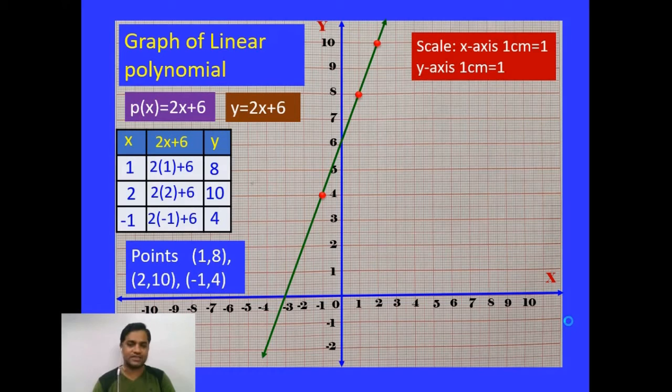Now observe this straight line where it is intersecting with x-axis. So the intersecting point of this straight line and the x-axis, see the point where it is intersecting the x-axis. Now the coordinates of the point are (-3, 0).